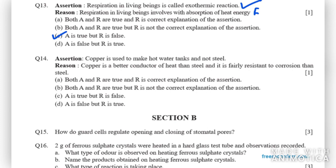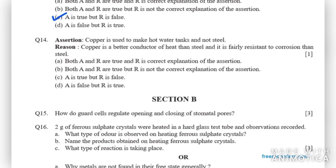Moving on to question number 14. It says: Assertion - Copper is used to make hot water tanks and not steel. Reason - Copper is a better conductor of heat than steel and is fairly resistant to corrosion than steel. Copper is used to make water tanks, that's true. Copper is a better conductor of heat than steel, that's true again. In this case, this is actually the right explanation. The right answer for this is A part, as both A and R are true and R is correct explanation of assertion. If it is not a correct explanation of assertion, then you have to choose B part. But in this case, it is A.